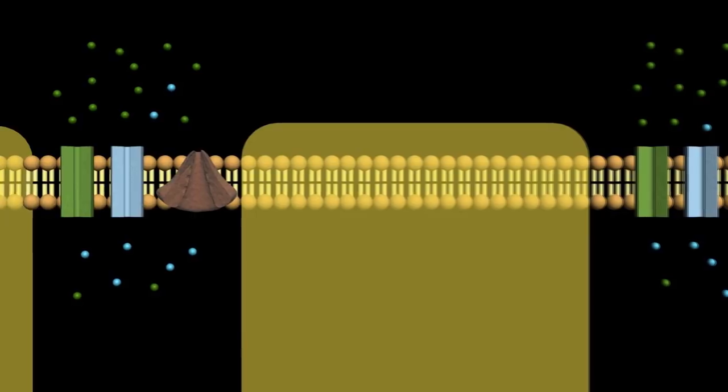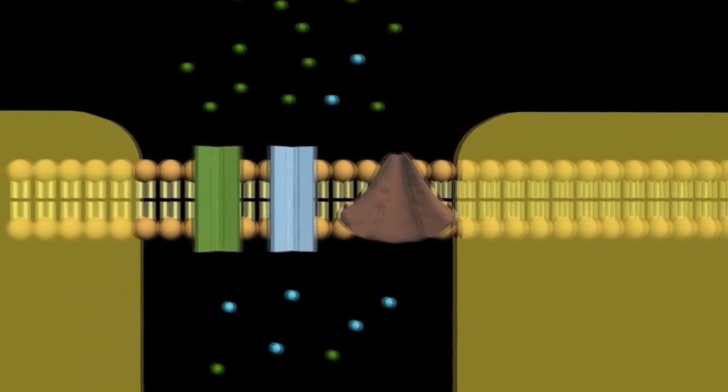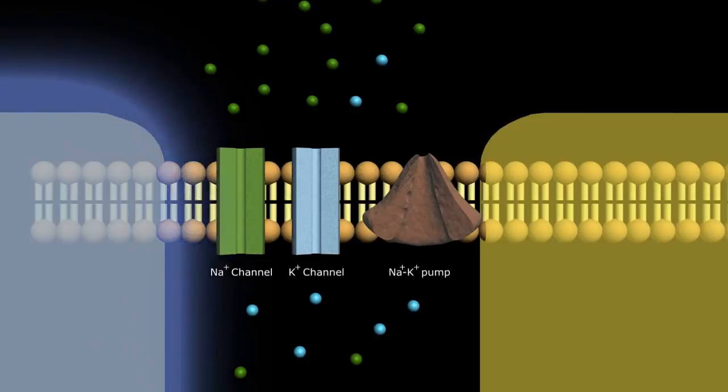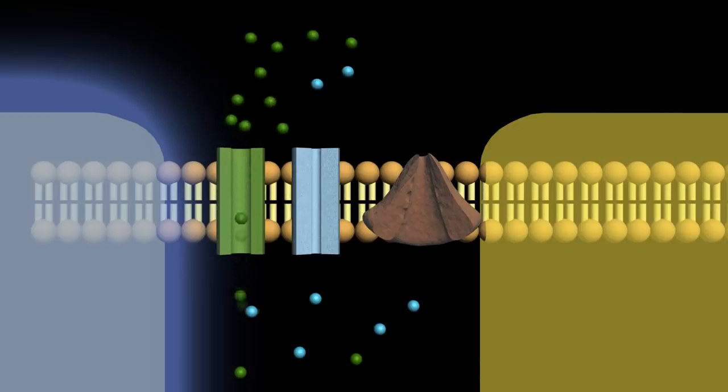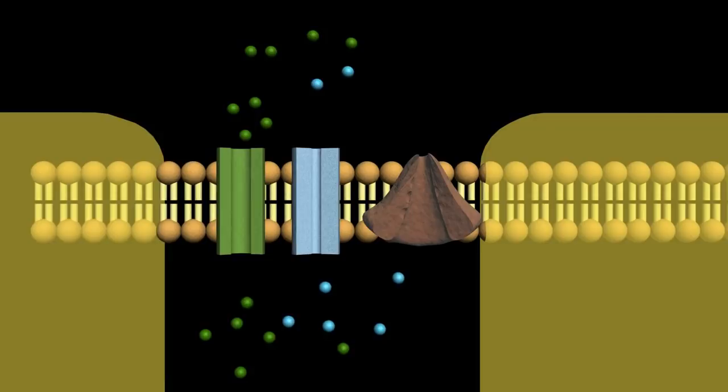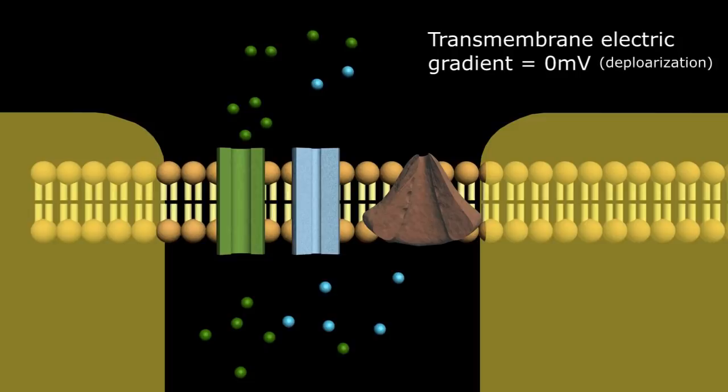Now let's zoom in on a single node and see how these ionic gradients are used to actually propagate the electric signal down the axon. Multiple transmembrane structures populate the node, including sodium channels, potassium channels, and the sodium-potassium pumps. An electric signal propagating down the axon causes sodium channels in the axon cell membrane in the region of the nodes of Ranvier to open up, which, because of the resting concentration gradient, causes sodium ions to flow into the axon, increasing the number of positive charges and reducing the electric gradient down to zero. This is called depolarization.